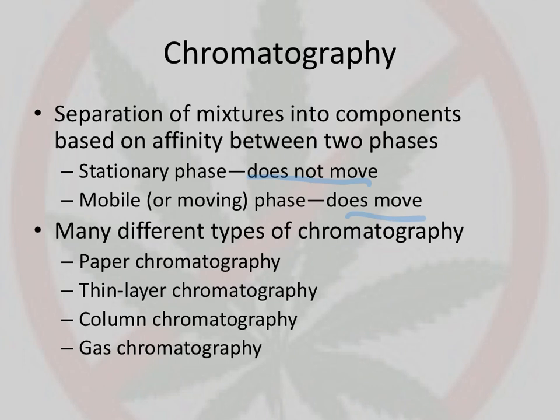There are different types of chromatography. Perhaps in different science classes you've used paper chromatography, where the stationary phase is a piece of paper and the mobile phase is the liquid that you dip just the edge of the paper in. Due to capillary action — the same process as when you put the edge of a paper towel on a spill and it gets sucked up — the solvent moves up the paper. The different components of the drug that really like the liquid solvent will move up the paper quickly, while others will stay near the bottom or not move at all.